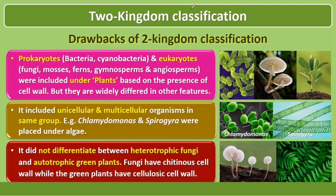The first drawback: prokaryotes and eukaryotes were placed under the same kingdom — Plantae — because of the presence of a cell wall. Prokaryotes like bacteria and cyanobacteria, and eukaryotes like fungi, mosses, and gymnosperms were all grouped together, even though they are widely different in other features.